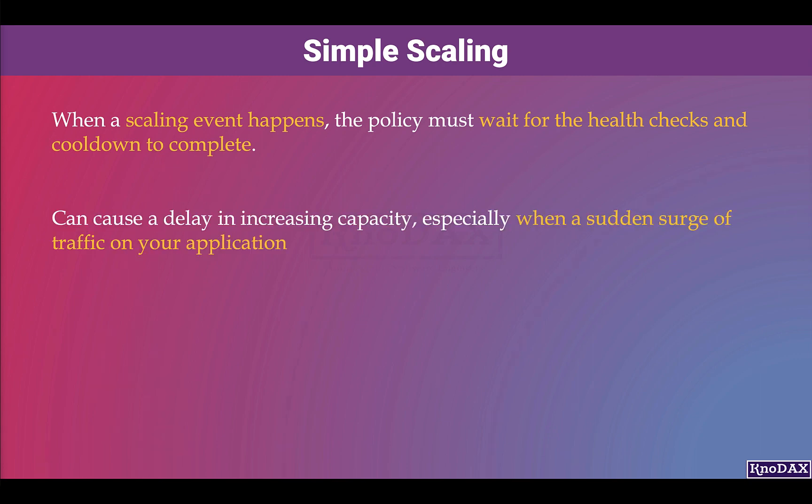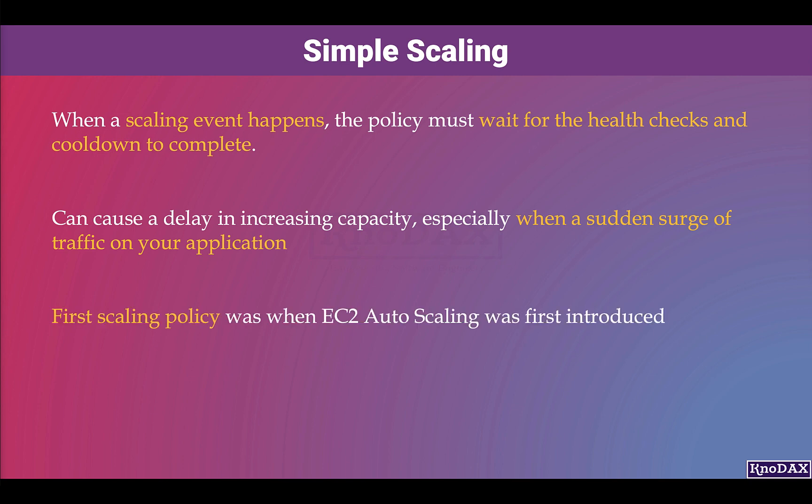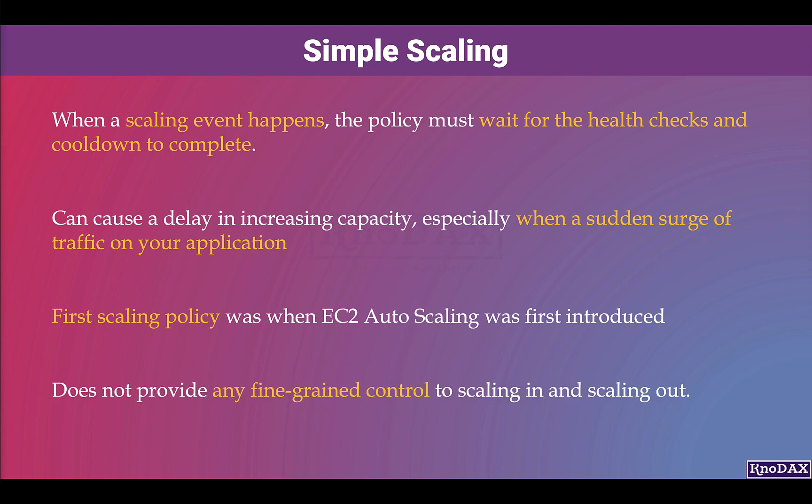Then it can respond to any additional alarm. This can cause a delay in increasing capacity, especially when there is a sudden surge of traffic on your application. This was the first scaling policy when EC2 Auto Scaling was first introduced, and it does not provide any fine-grained control to scaling in and scaling out.